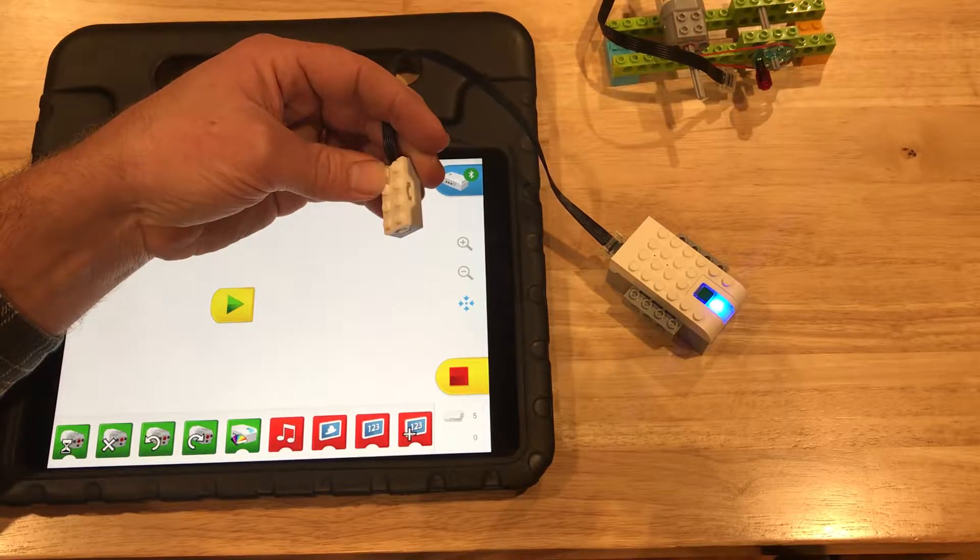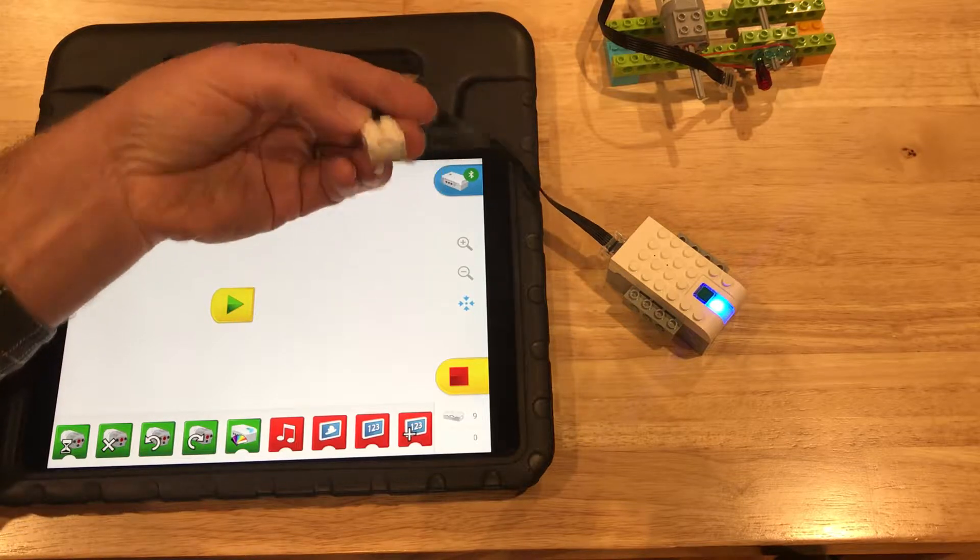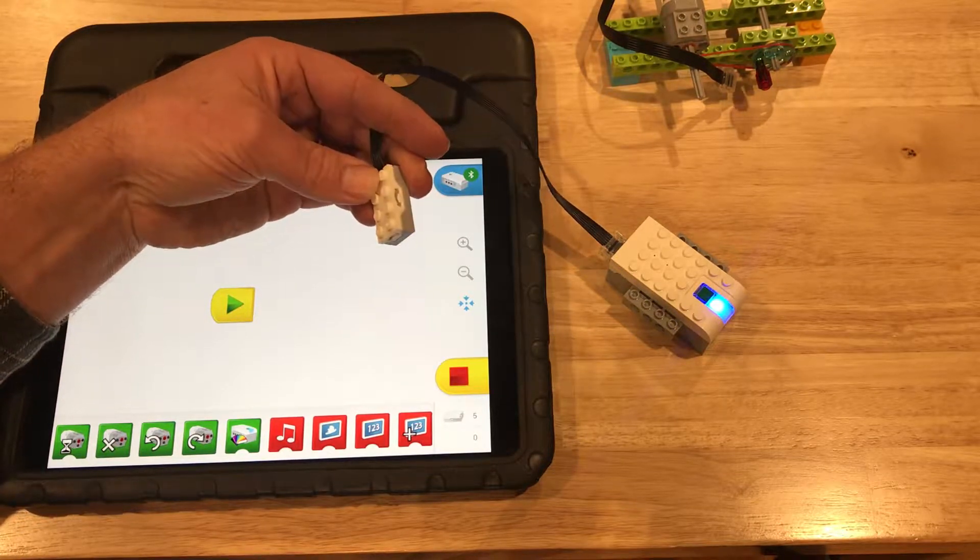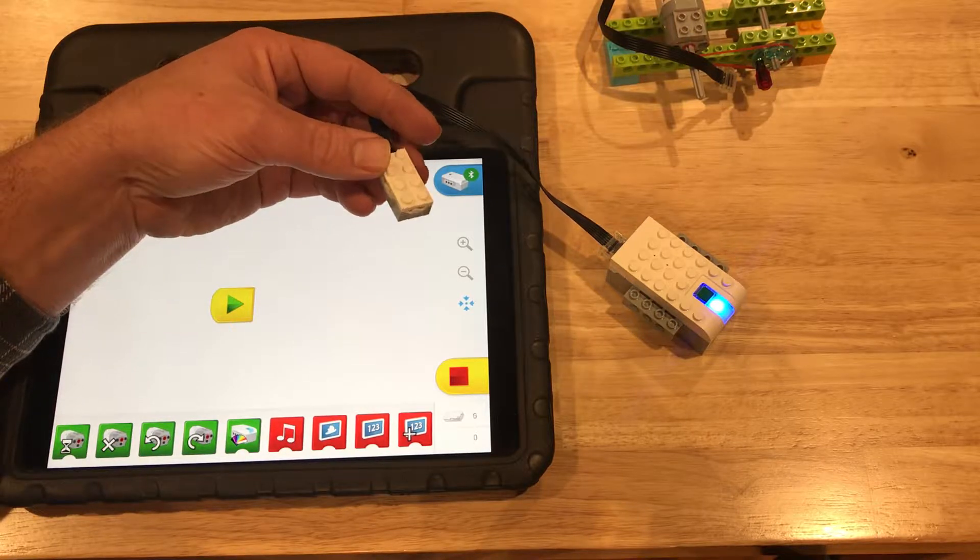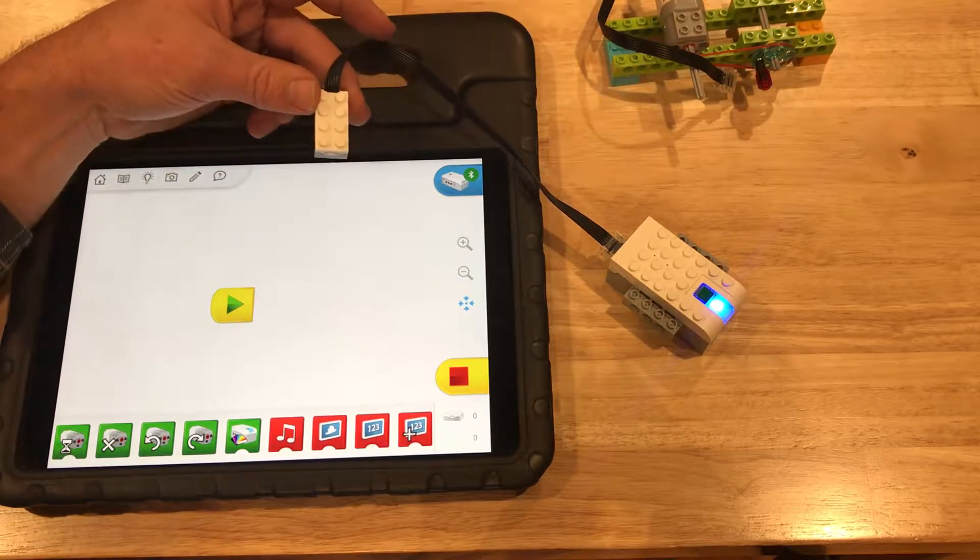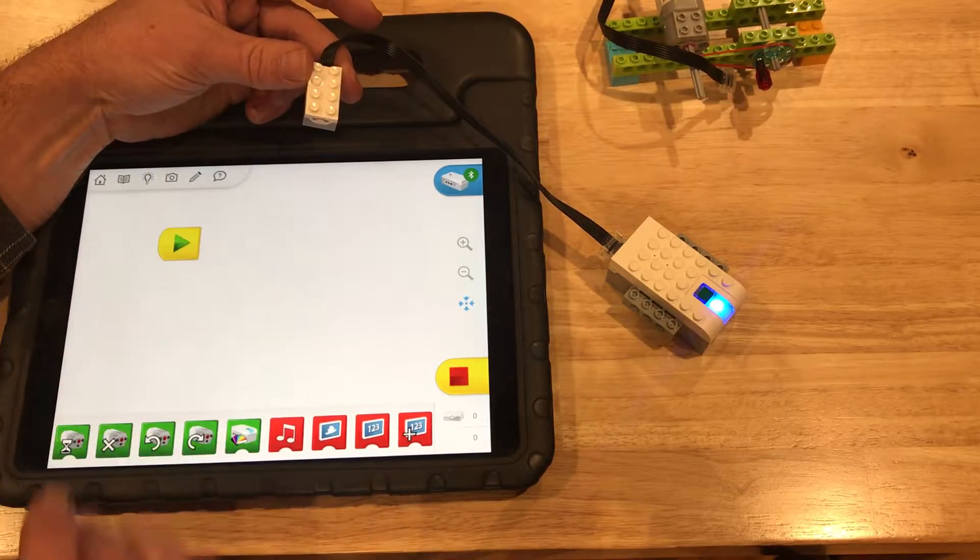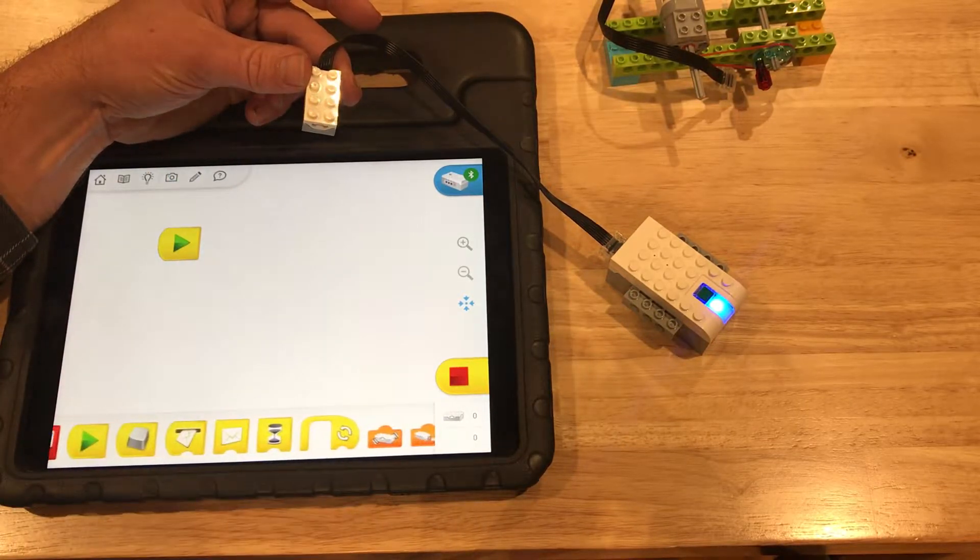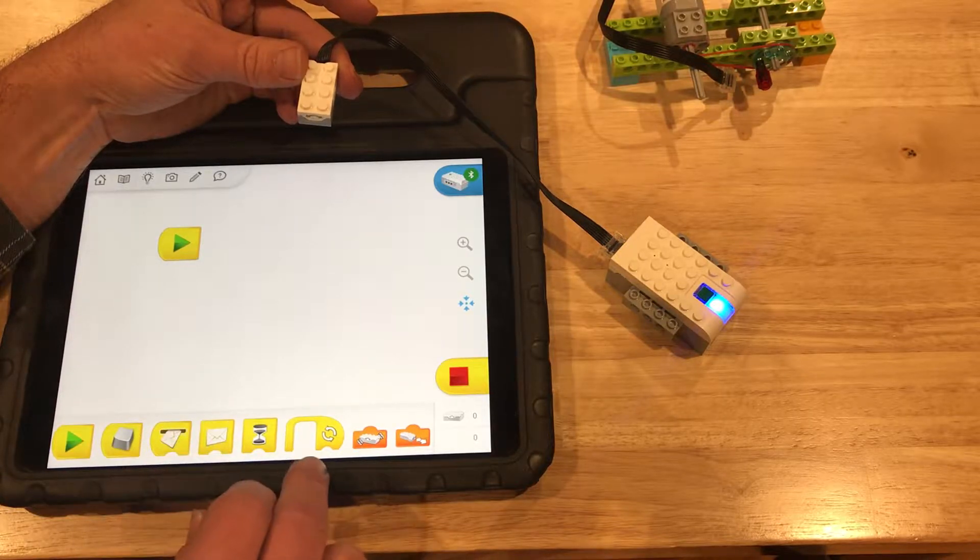So we can start thinking of this as a joystick almost, where up, down, left, and right are values that we can predict and we can write code that takes those into account. So we're also going to introduce the concept of sending and receiving values.